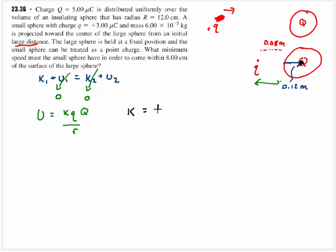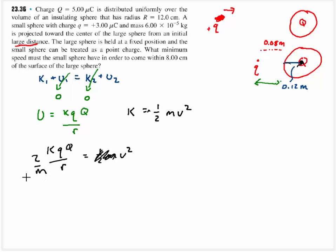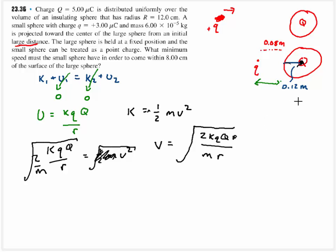We write kinetic energy as one half mass velocity squared. Setting these equal: K times Q times q divided by r equals one half mass velocity squared. Multiplying both sides by 2, dividing by mass, and taking the square root gives velocity equal to the square root of 2K times Q times q divided by mass times radius. The radius here is the distance from the point charge to the center of the sphere: 0.08 plus 0.12 equals 0.2 meters.